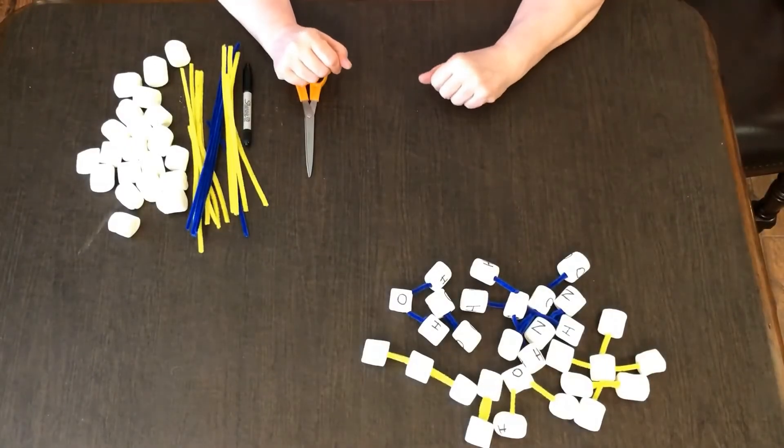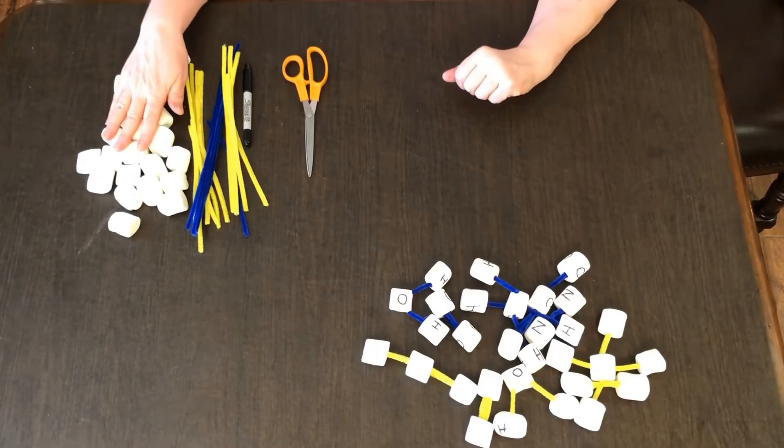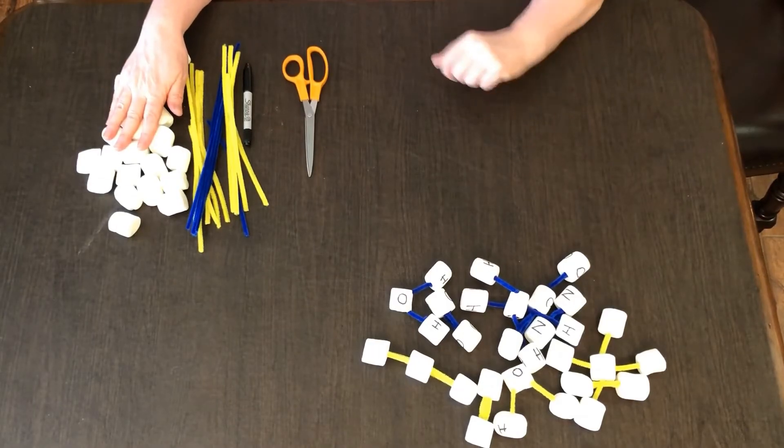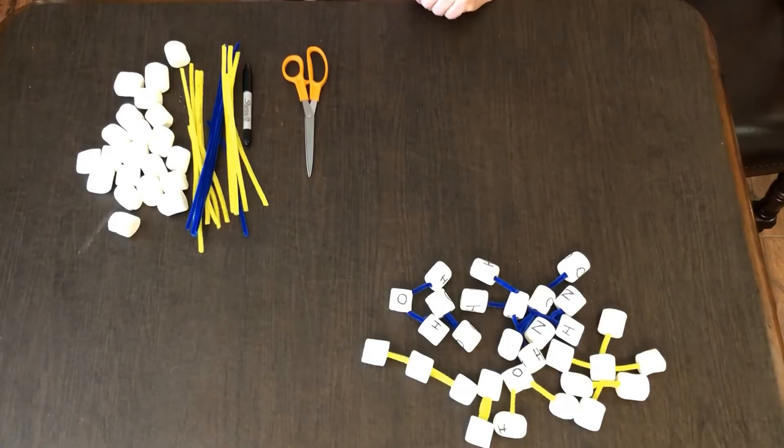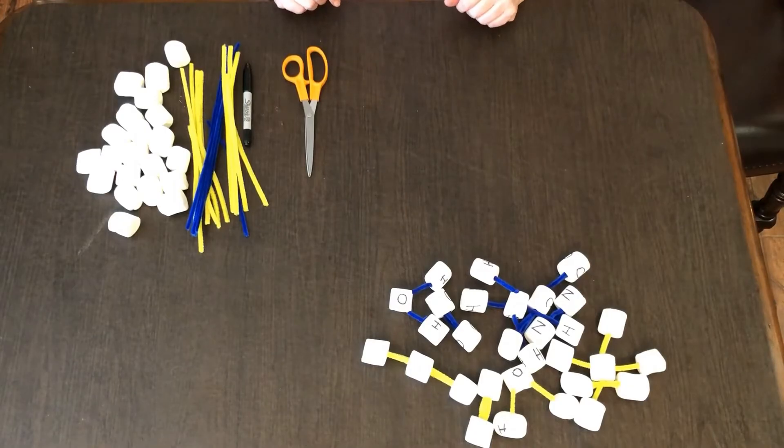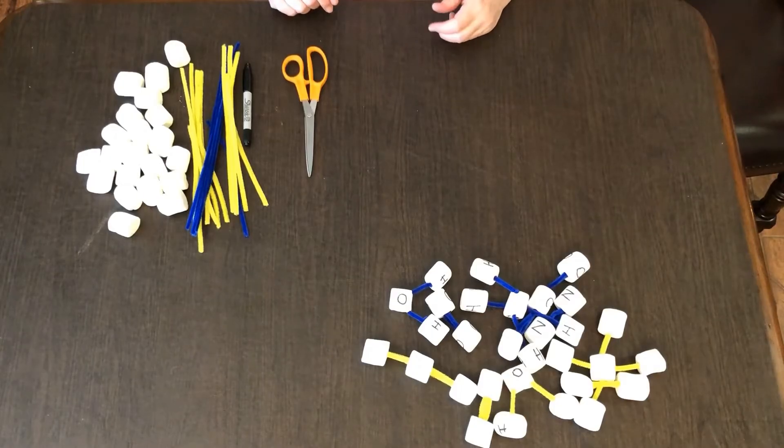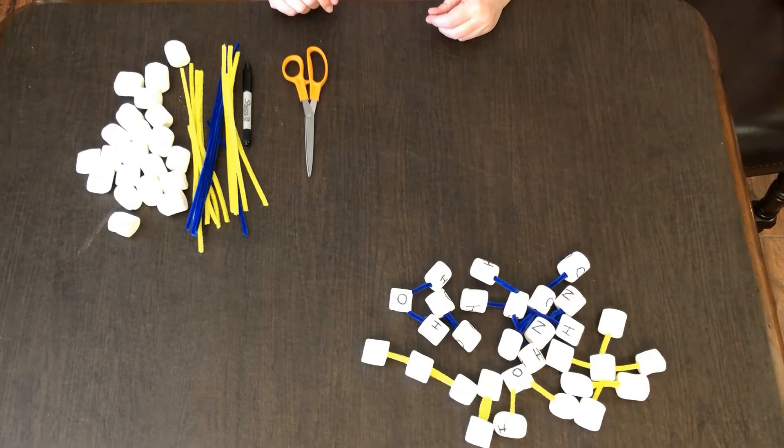To make the marshmallow models, you'll need marshmallows that you've laid out for about 24 to 48 hours. If you lay them out longer than that, it'll be too hard to put the pipe cleaners into them. The reason you lay them out is to let them dry out a little bit—they're easier to handle, they're not sticky, and it discourages the kids from eating them.